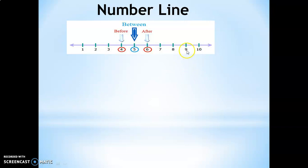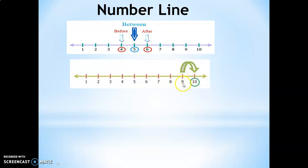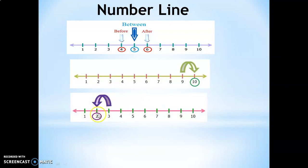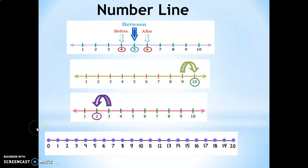Now let us move on to some question and answer session. Where is number 9 in this number line? What is the number which comes after 9? The number which comes after 9 is number 10. Next, what is the number which comes before 3? The number which comes before 3 is 2.